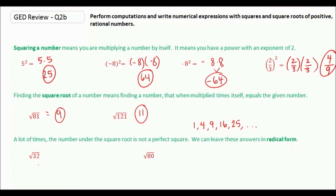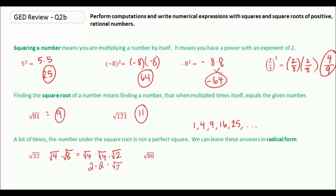Most of the time these numbers are not perfect squares, so we can leave answers in radical form. We want to find a perfect square that goes into our number. For 32, that equals 4 times 8, so root 32 is root 4 times root 8. Root 8 can be broken up further as root 4 times root 2. The square root of 4 is 2, and we get 2 times 2, which is 4, so our final answer is 4 root 2.